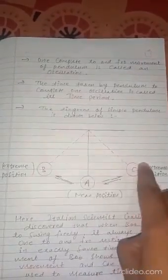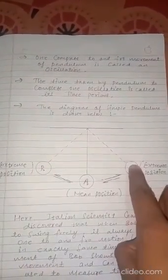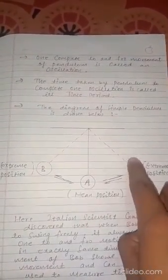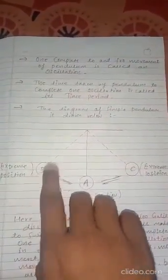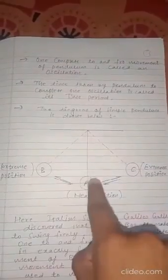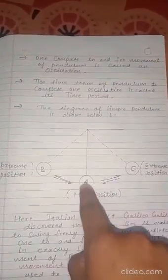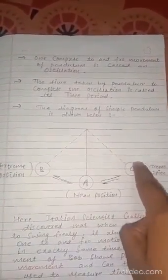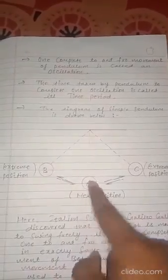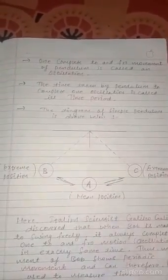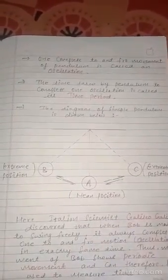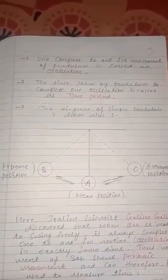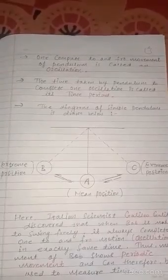One oscillation को दो तरीके से बोल सकते हैं: एक extreme position से second extreme position तक and back to the same extreme position; or starting from mean position to extreme position, then to other extreme position, and back to mean position — इसे भी one oscillation बोलेंगे। That's all in this video, thank you.